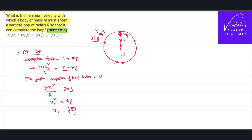The body turns and comes to the bottom with velocity v-bottom. At the bottom, weight acts downward and tension acts towards the point of suspension — towards the center. So mv_bottom² / r = T − mg, since weight acts against the center. At the bottom, tension cannot become zero, because if it did there would be no force acting towards the center and circular motion would not be possible.